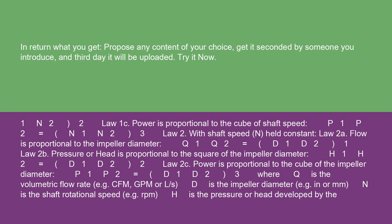H1/H2 equals (D1/D2)^2. Law 2C: Power is proportional to the cube of the impeller diameter. P1/P2 equals (D1/D2)^3, where Q is the volumetric flow rate, e.g. CFM,